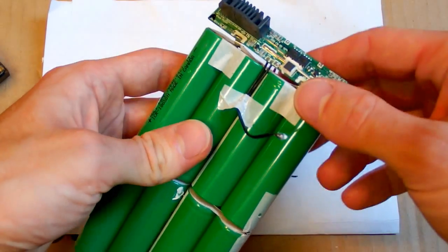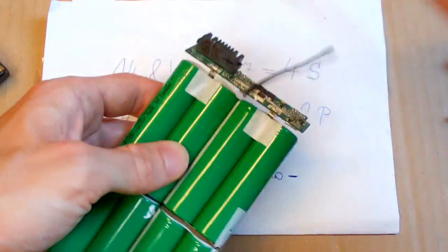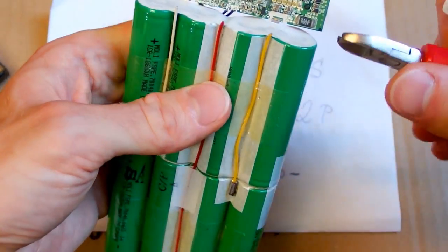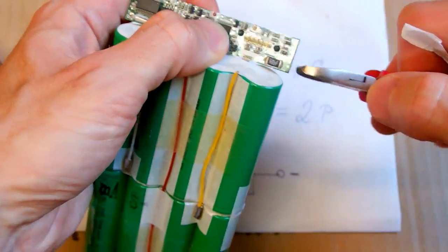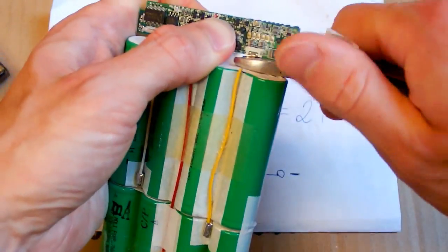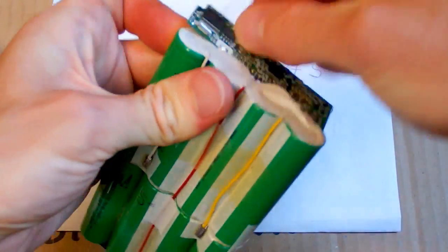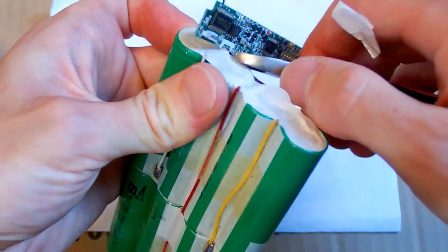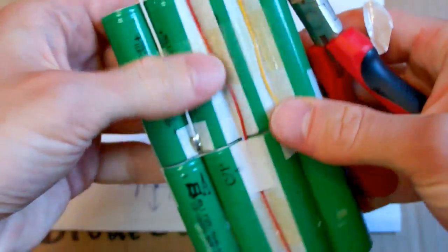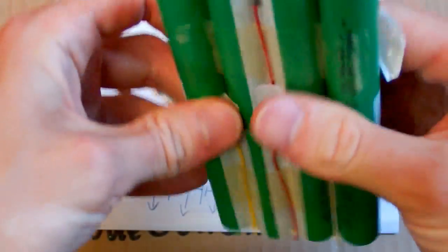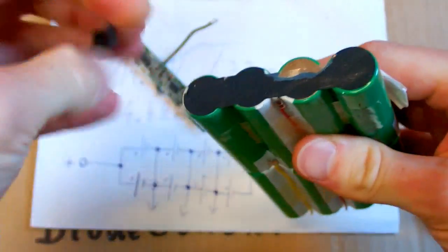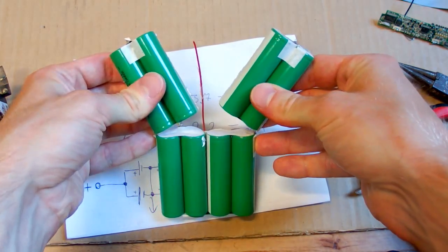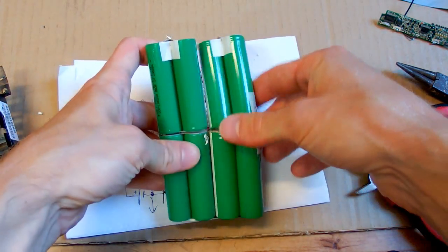Now I am going to measure the voltage of those cells. So let's expose the connections. Cut this one because we don't need it. So it looks like this. There are two, two, two, two, and two.